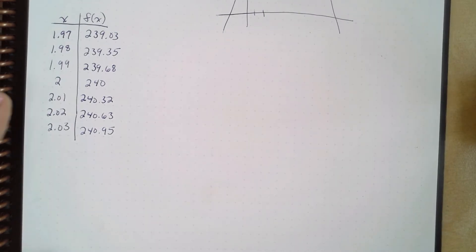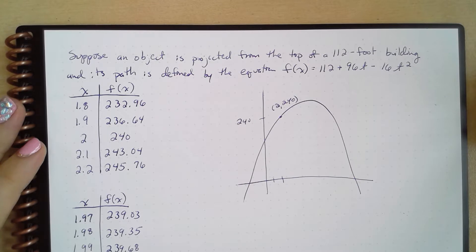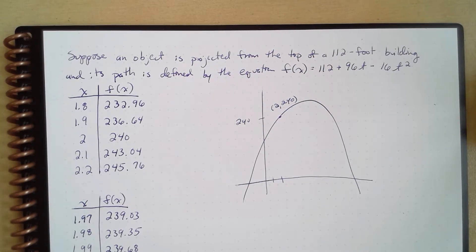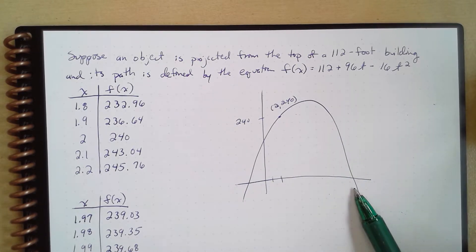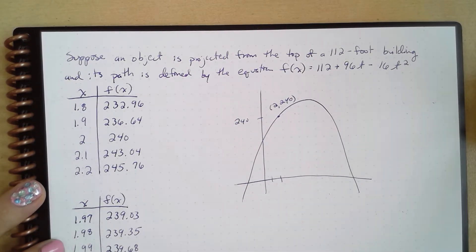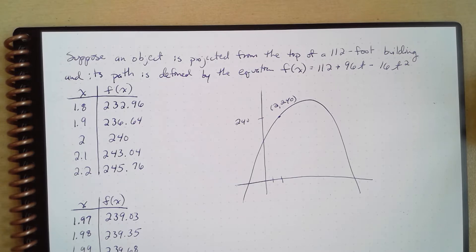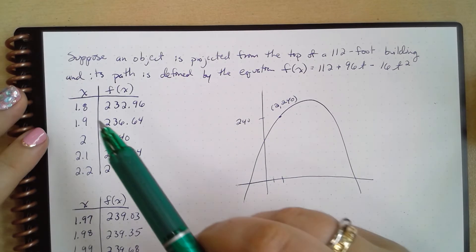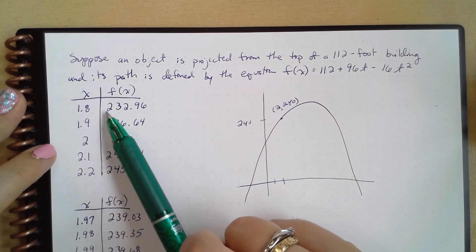Well, we still want to talk about another type of path. So suppose an object is projected from the top of a 112-foot building, and its path is defined by the equation 112 plus 96t plus 16t². And I've actually graphed that for us here. It's a pretty rough version of the graph. And then here I've written down what f(x) is at different points in time.